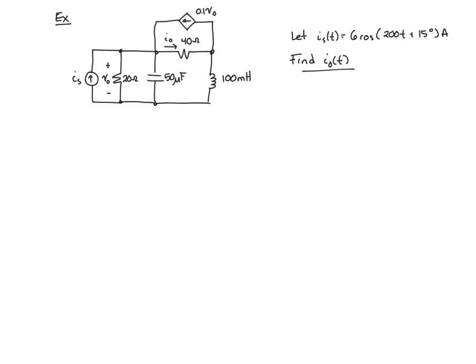Our objective is to find the current I0, or I sub zero, as a function of time that's through the 40 ohm resistor. Note that this problem has resistors, a capacitor, and an inductor. So if we do this problem in the time domain, we're going to have a second order differential equation. It'll be fairly complicated to solve in the time domain.